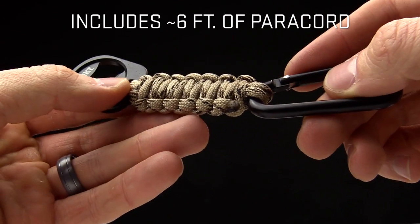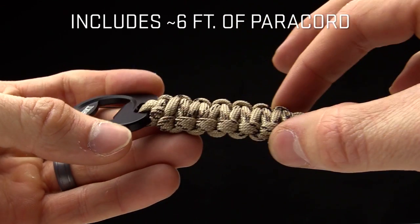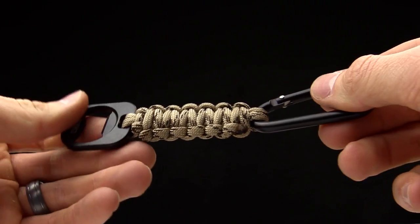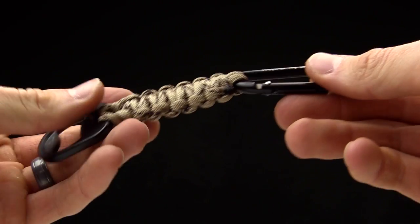You've got about six feet of paracord lanyard, and a carabiner so you can clip your keys on here, clip this on your gear, and keep your gear in order.